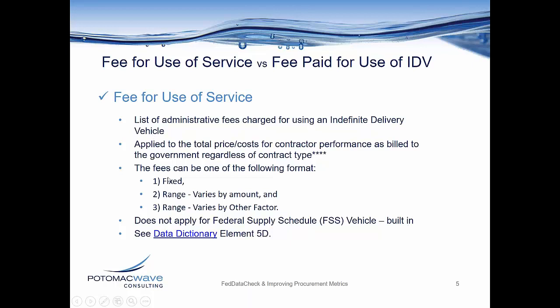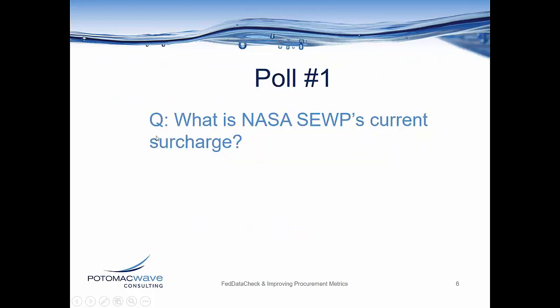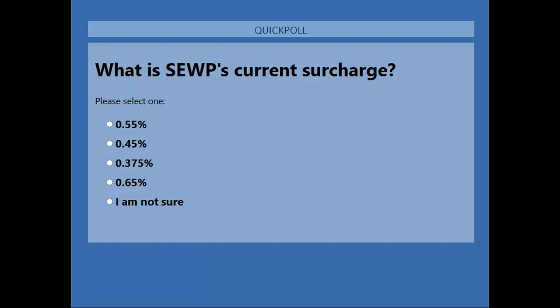These fees are often referred to by different names. It can be called a contract access fee, an NCAP — an NITAAC contract access fee — or in the case of NASA SEWP, it's called the surcharge. I'm going to launch a poll now to see how many folks are familiar with NASA SEWP's current surcharge. Answering these polls is also important when trying to qualify for CLP points.